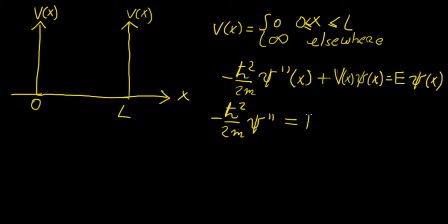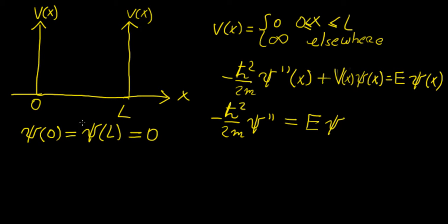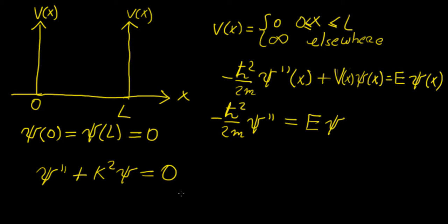The potential inside the box is zero, so the Schrödinger equation becomes the kinetic term equal to E times the wave function. We also have two boundary conditions: at the boundaries and outside them, the wave function must be zero. To simplify, we reduce the constants by making the substitution k² = 2mE / ℏ², rewriting the equation as d²ψ/dx² + k²ψ = 0.